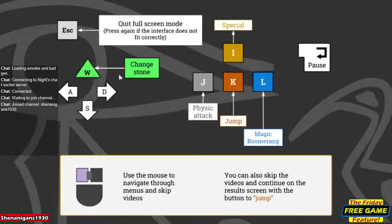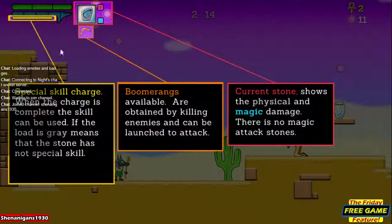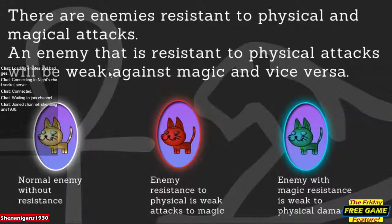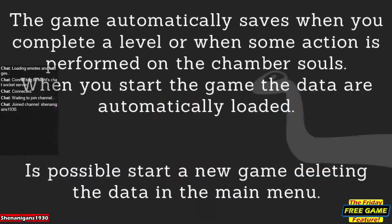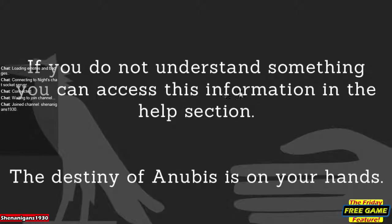So we have these things called stones — it's like a magic power kind of thing. You get specials, special attacks. Your special skills include a boomerang item and different types of attacks using the stones. We have different types of enemies: this one is resistant to physical and weak to magic, and this one's strong against magic and weak to physical. The game automatically saves.